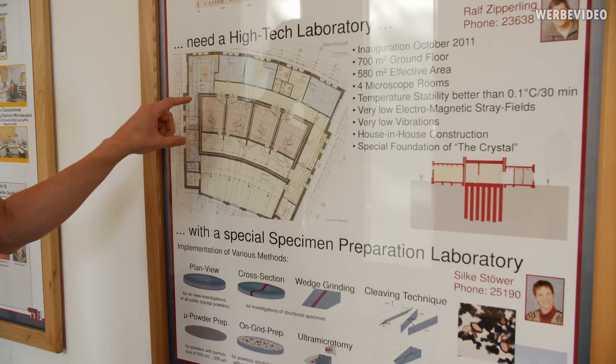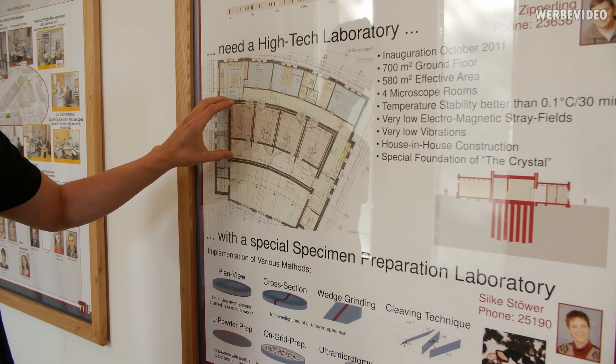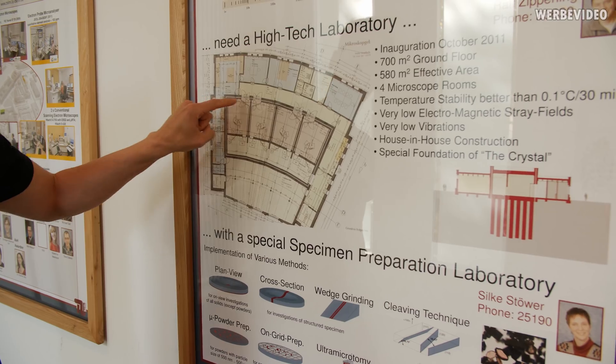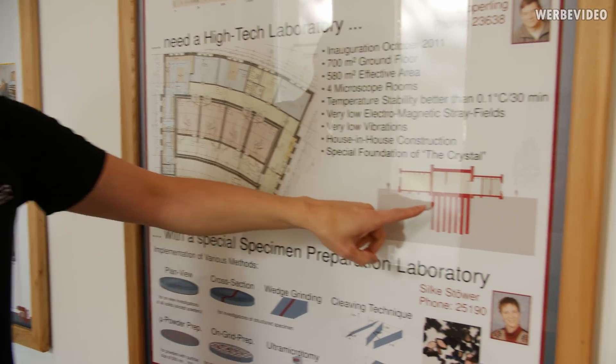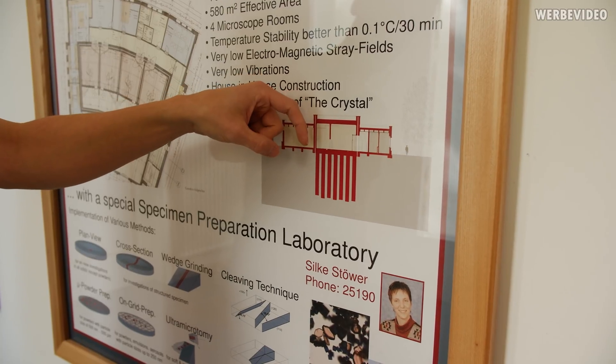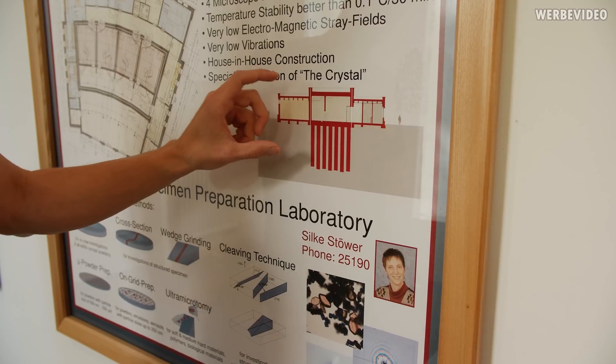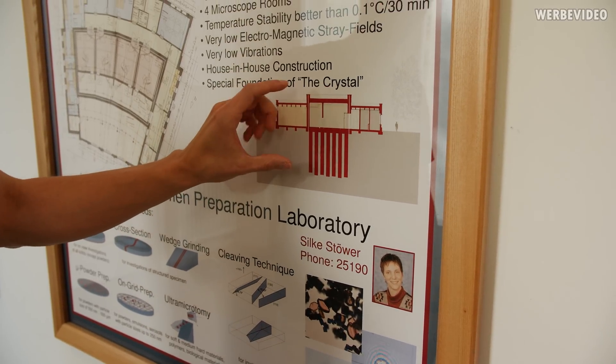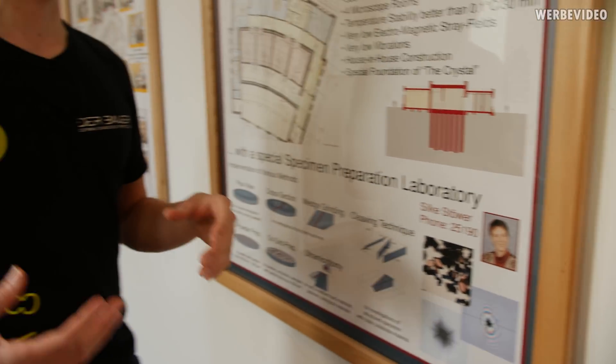Basically we have two buildings in one. There is this center building right here which is separated from the outer one and you can see there's this gap in between. If we take a look on the right side we have concrete pillars going into the ground by about 10 meters. This was required to have a disturbance-free environment from the outside, otherwise we would have vibrations inside the building which would make it impossible to take those kind of shots with the microscopes.